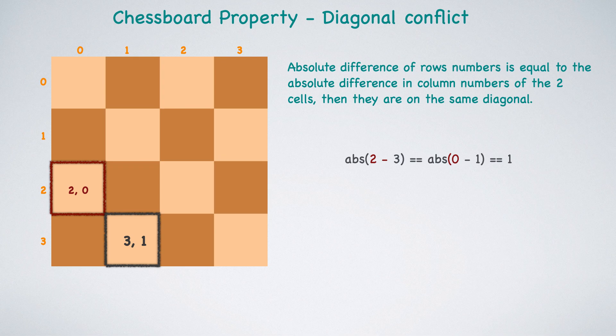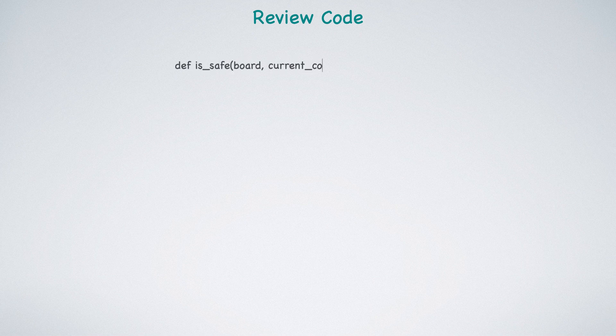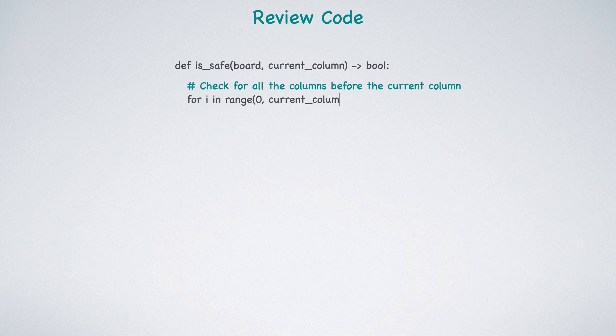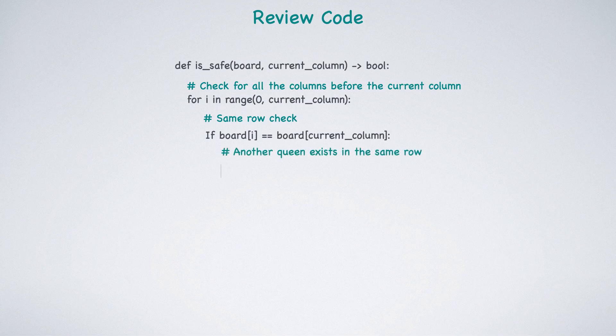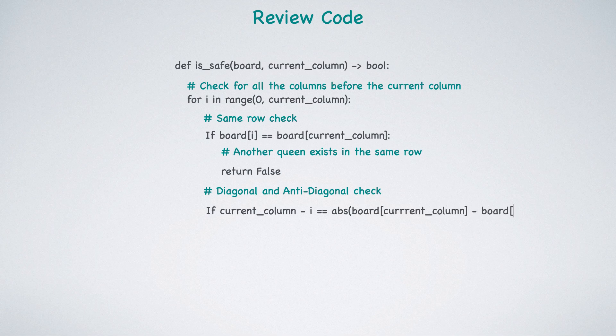The ISSAFE function takes the board and the current column as parameters and returns a boolean. Within our function, we'll iterate over all columns before the current column. If board of i equals to the board of current column, it indicates that both queens are in the same row and so will return false. Next, we'll check the diagonal and anti-diagonal. If current column minus i is equal to the absolute difference between board of current column and board of i, we'll return false. This code checks if queens are on the same diagonal by applying the principle we discussed earlier regarding the properties of a chessboard. If we iterate through all the columns up until the current column without any conflicts, we'll return true.